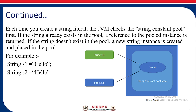For example, String s1 = "hello" and String s2 = "hello". When I create the string s1 with value hello, it is created in the string constant pool area. The second time, when I create a string with the same value hello, it will first check if the string constant pool already has the same value. If it does, only the reference to the pooled instance is returned.